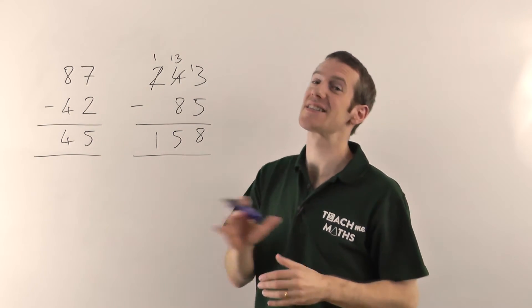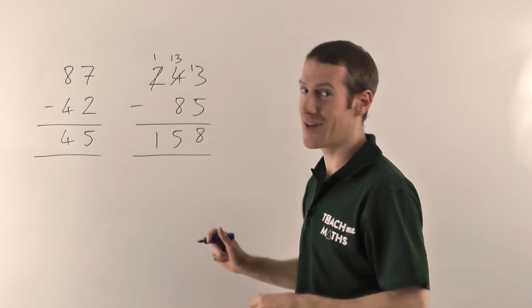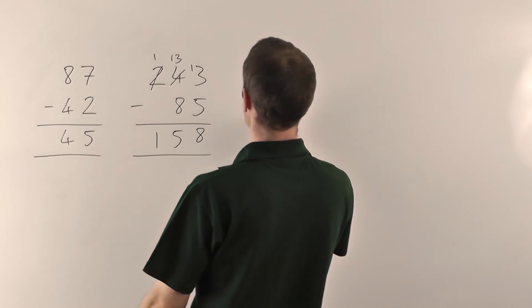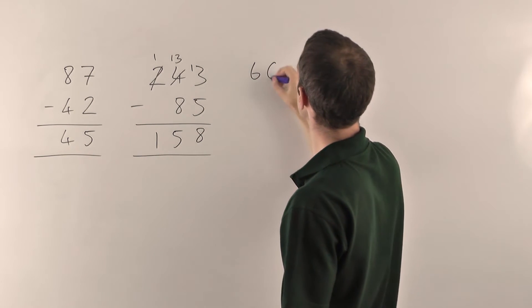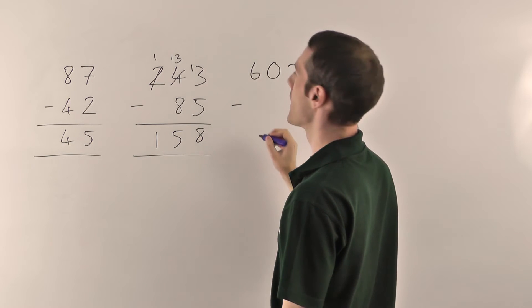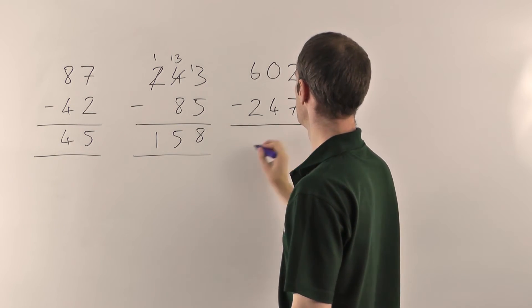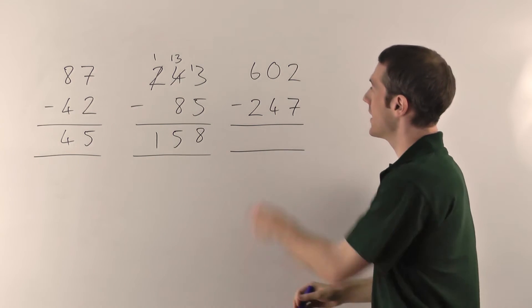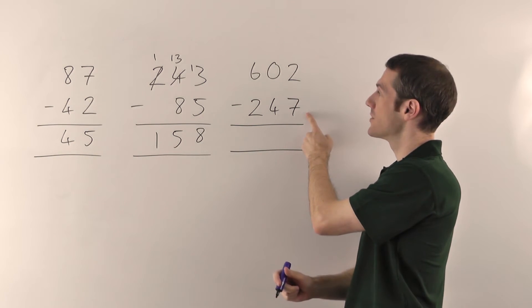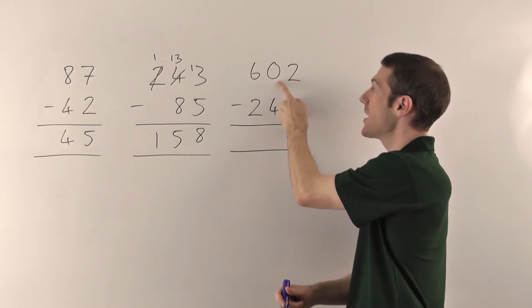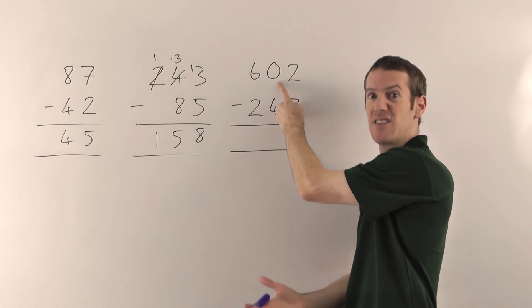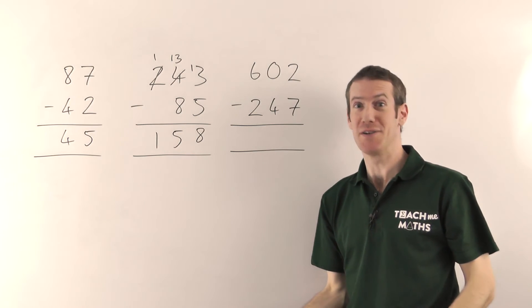However, there is one other slight hiccup you might encounter. Let me show you. We'll try 602 minus 247. So 2 minus the 7, can't do that, but that's okay. We'll just borrow from the... Oh, there's nothing there to borrow from. What do we do now?